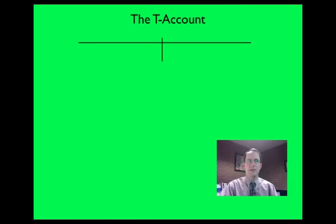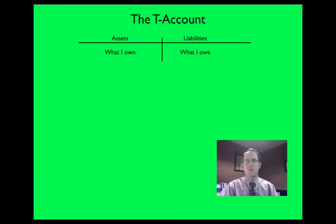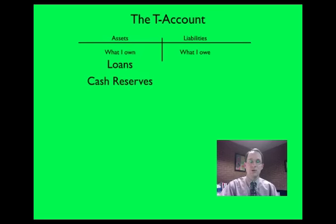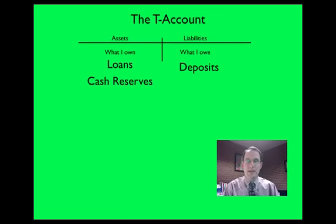A T-account is nothing more than a simple balance sheet. It looks like a T — that's why they call it the T-account. On the left side it has assets, on the right side it has liabilities. Assets are what I own, or in this case what the bank owns. Liabilities are what I owe, or what the bank owes. Loans and cash reserves are assets the bank owns. Deposits are liabilities because although the money sits in the bank's vault, it's somebody else's money — ultimately the bank owes it should somebody come and ask for it.